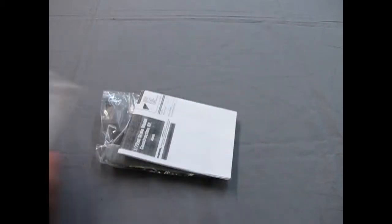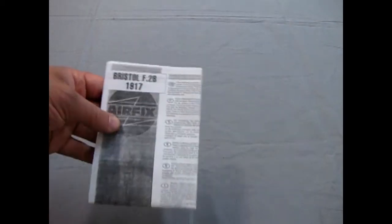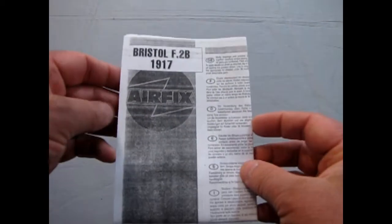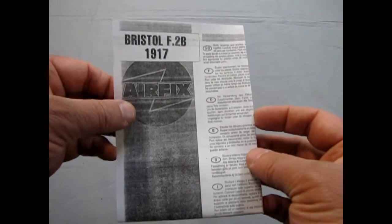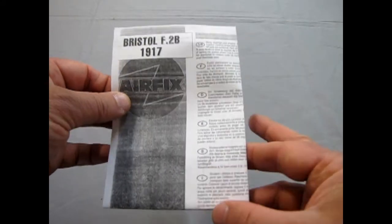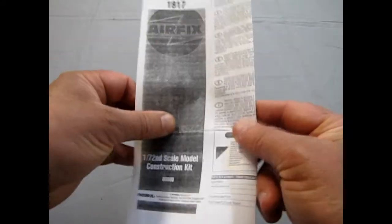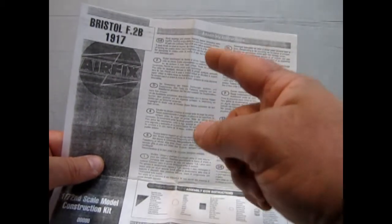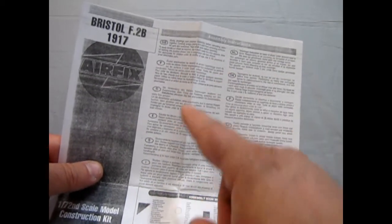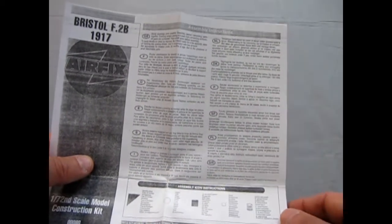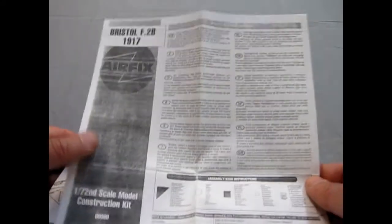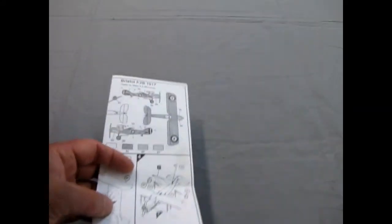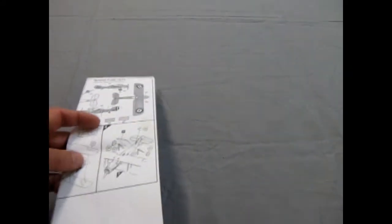So we'll move some of this out of the way and the first thing we will look at are the instruction sheets which say the Bristol F2B came out in 1917, and there goes the other part of the instructions. So here once again we have instructions in all the languages of Europe.